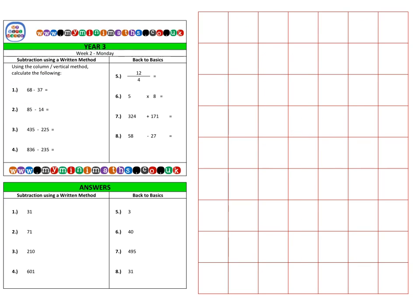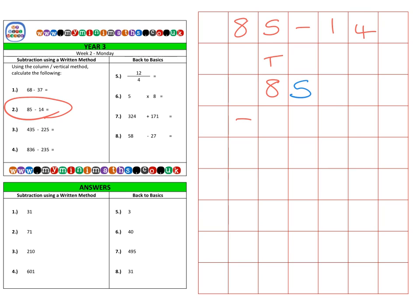Next we're on to question two, which is 85 take away 14. Again, we write out our numbers in tens: there's my 85, and I'm going to subtract the 10 for the 14 and then the four units.